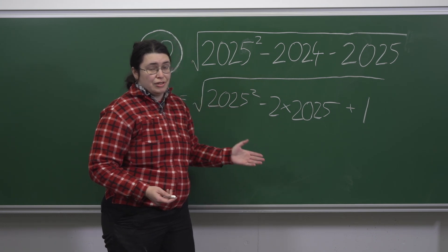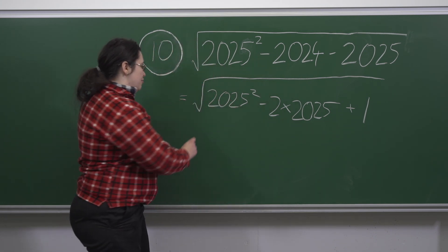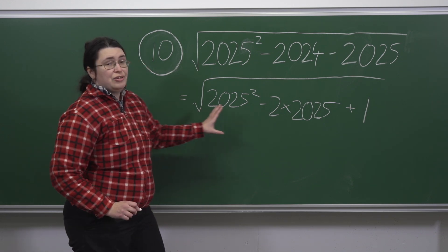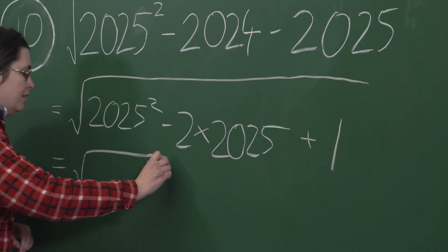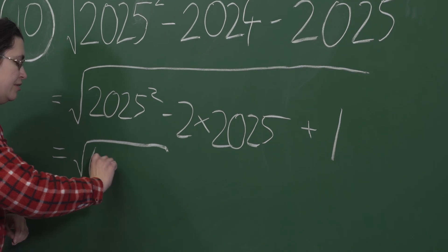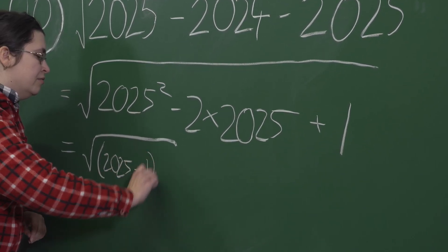Because this could be written as 2 times 2025 times 1 if you like. So we can factorise the expression underneath the square root as 2025 minus 1 squared.